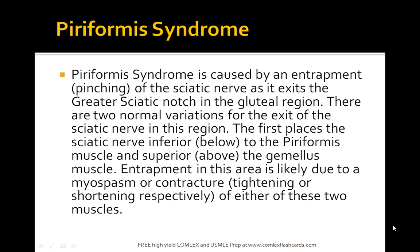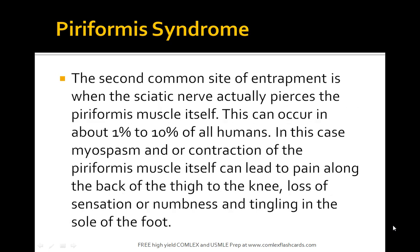Piriformis syndrome is caused by the entrapment of the sciatic nerve either as it passes through the greater sciatic notch, going below the piriformis muscle and superior to the gemellus muscle. An entrapment in this area will likely cause myospasm or contracture of either of the two muscles.